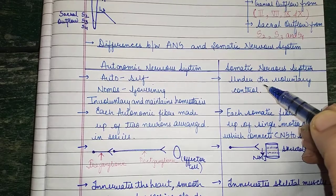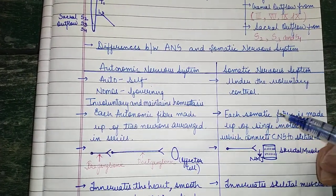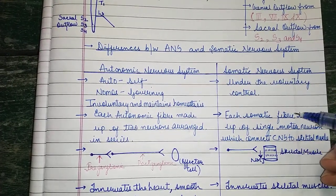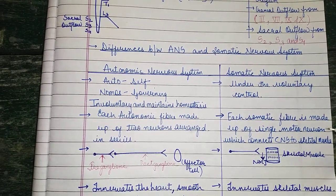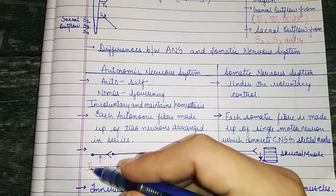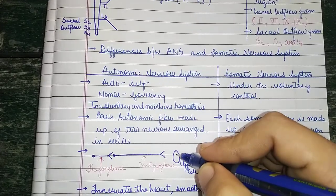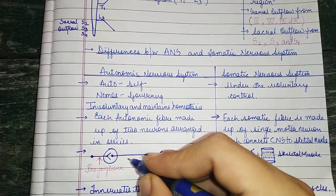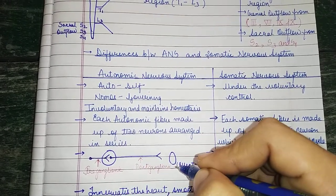Each autonomic fiber is made up of two neurons arranged in series: one is the preganglionic neuron and one is the postganglionic neuron. In contrast, each somatic fiber is made up of a single motor neuron which connects the CNS directly to the skeletal muscles. Looking at the diagram, we can see the preganglionic fiber, the postganglionic fiber, the effector cell, and the ganglion. The preganglionic fiber is small and the postganglionic fiber is large.